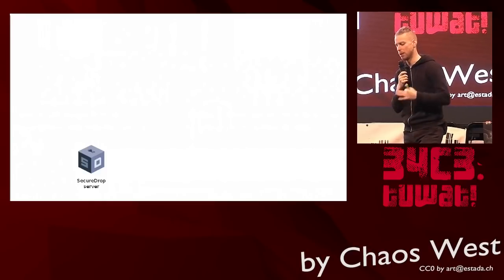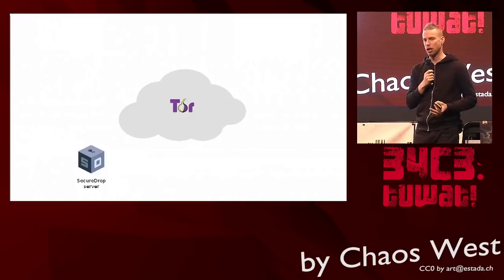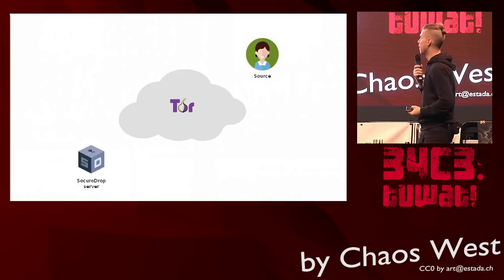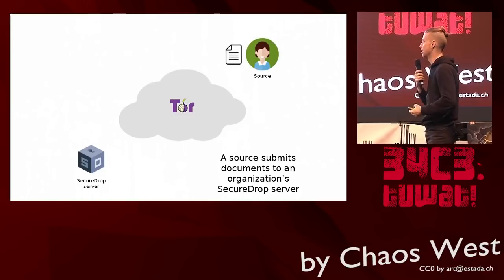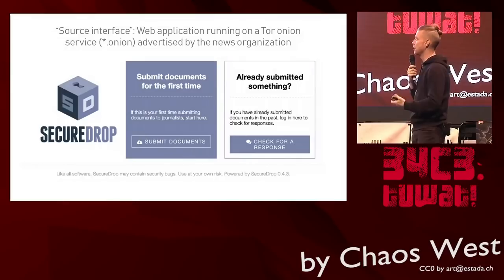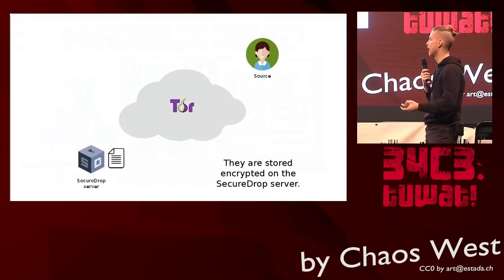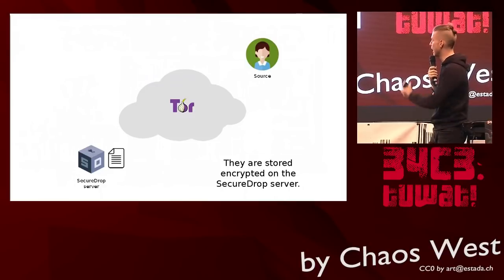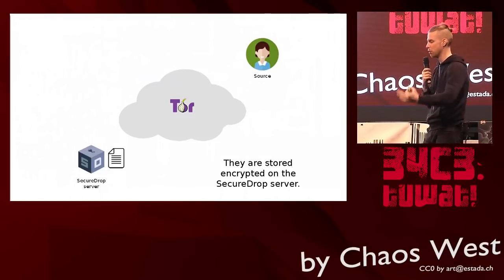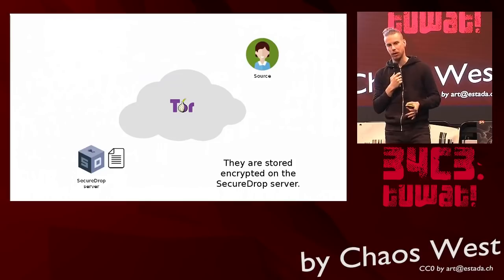So we start off setting up a server behind a firewall in a news organization — this server only runs as an Onion service. The firewall blocks all incoming traffic and we expect a source to connect to it through the Tor network. The source will see a landing page and have the opportunity to submit documents. They will be assigned a random code name which allows them to log back in the future. Data moves with end-to-end encryption through Onion services to the SecureDrop server, which encrypts it with PGP, stashes it, and notifies the journalists.